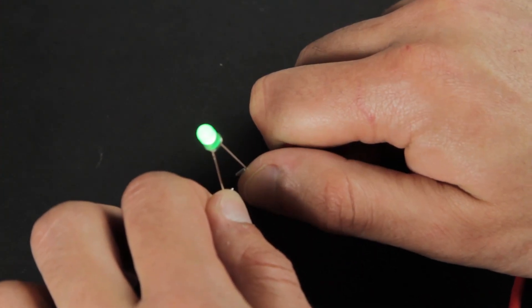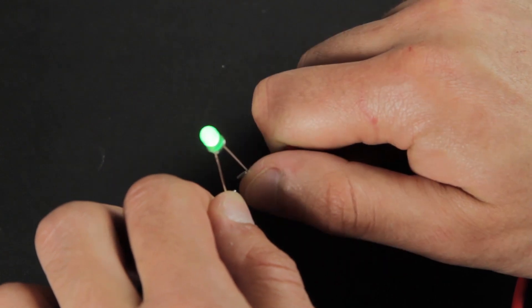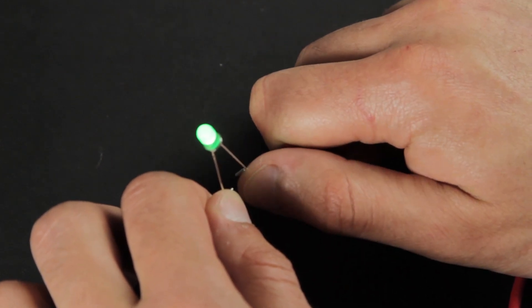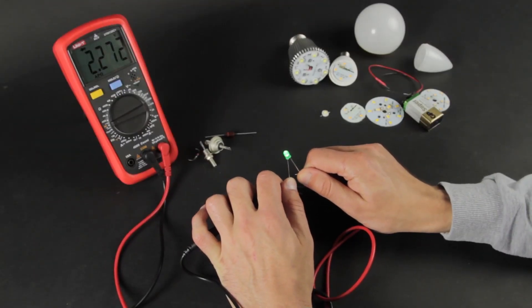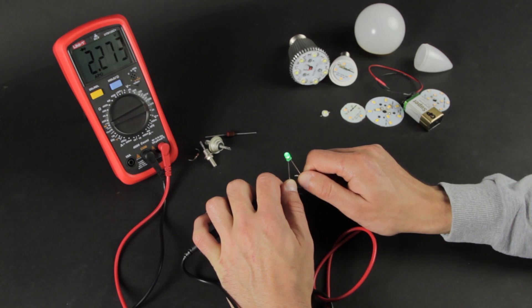It also has a cathode and an anode. We attach the probes. The only difference is that when you see a voltage drop on the screen, the LED lights up, because the three volts generated by the multimeter is enough.